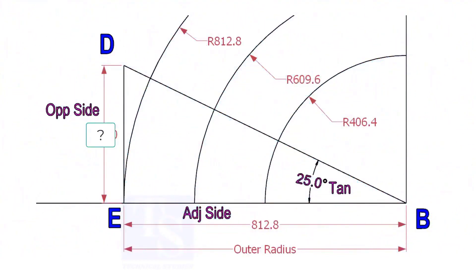Mark a line 25-degree rotated from the base line AB. To draw the line DB, we need to know the length of the line ED.